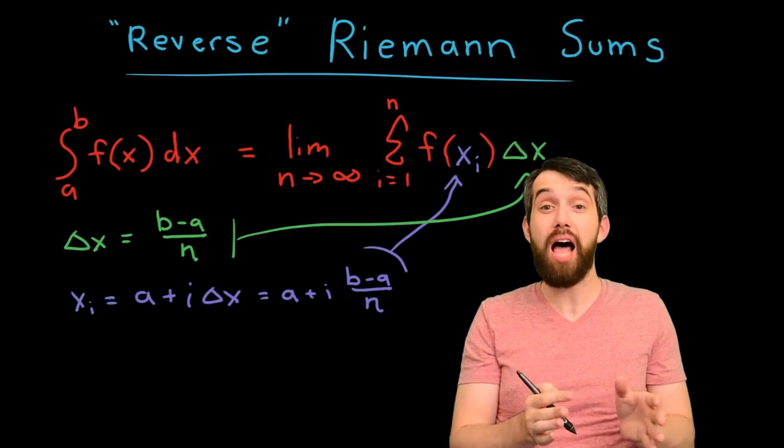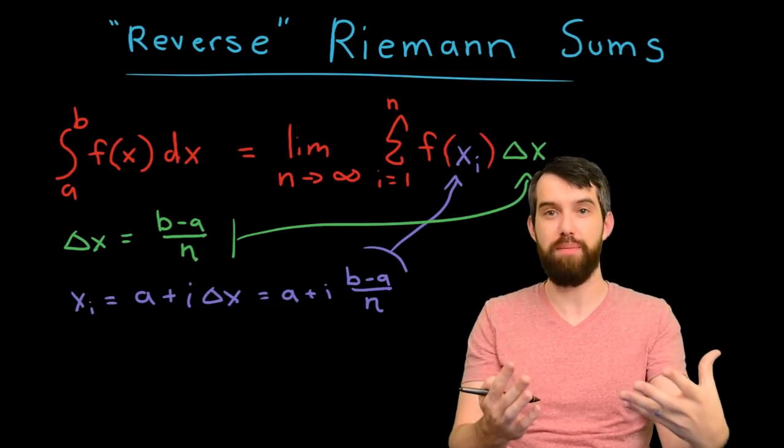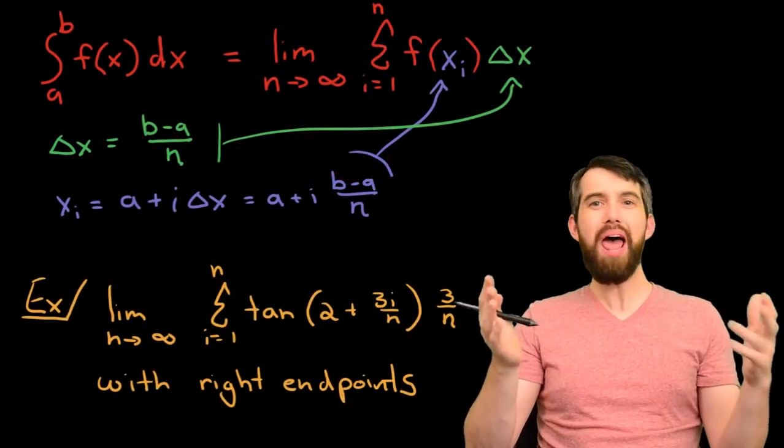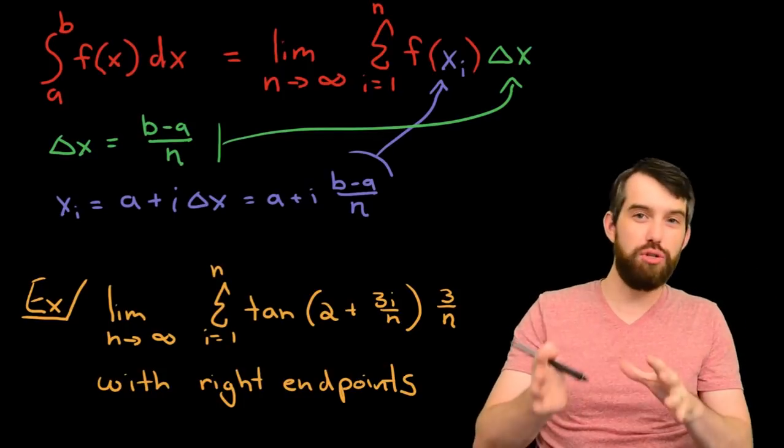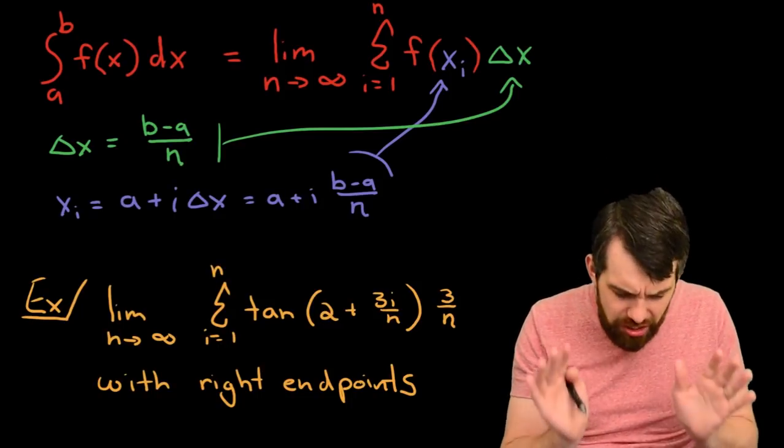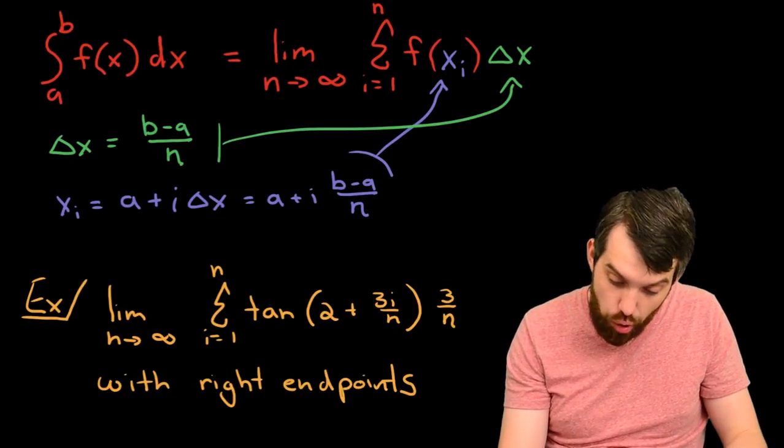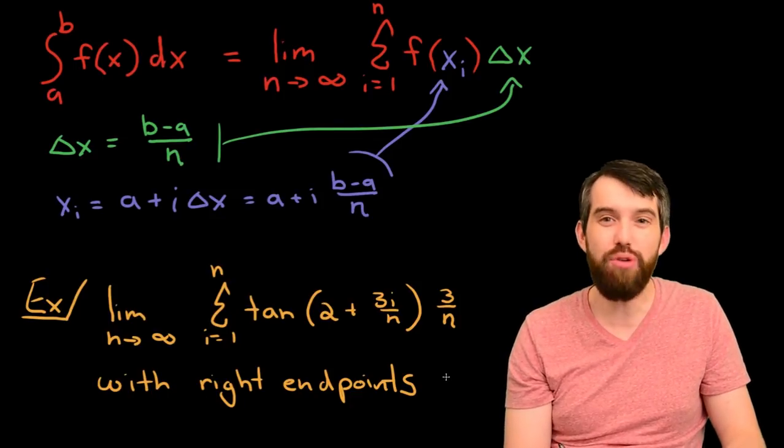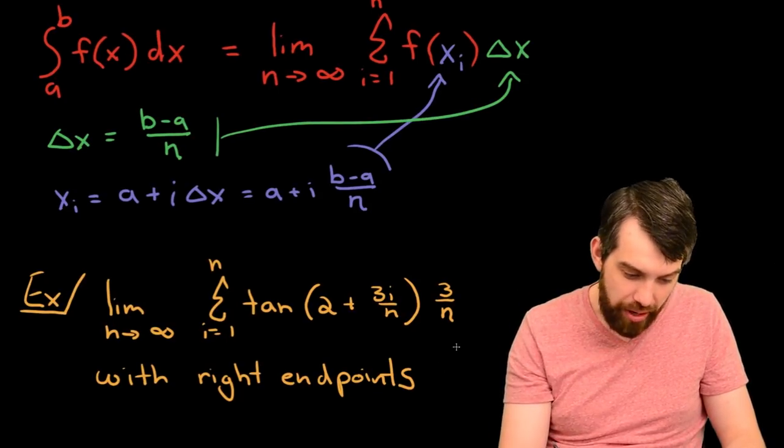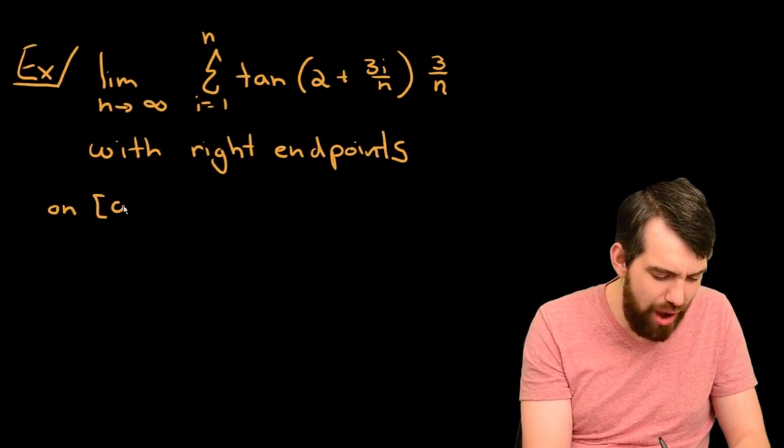By the way, this worked for x_i denoting right endpoint approximations. There's a very small change if we wanted to denote left endpoint approximations, but the standard way to ask this problem is with right endpoint approximations. So, what I've written down here is, I've got a limit as n goes to infinity, I have a sum of i equals 1 to n, and then I have the tangent of 2 plus 3i times 3 over n, and I'm claiming that I'm using right endpoints on the interval 0 to 3.